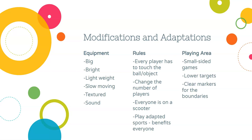You also want to use lightweight equipment so students who may not have as much muscular strength can still be successful. Lightweight equipment also tends to be slow-moving, which helps with processing time — it gives students extra time to see where the object is in space and get to it. Use things with different textures; I keep a big bag of various sizes, colors, shapes, and textures of balls found at dollar stores, pharmacies, or Target.